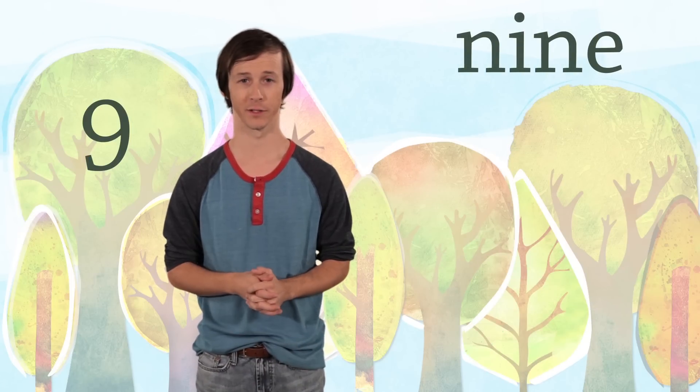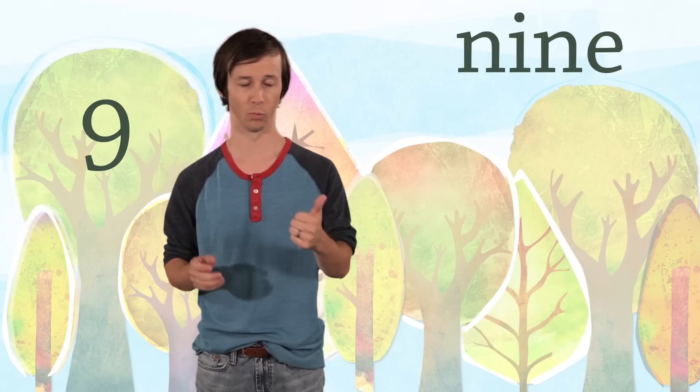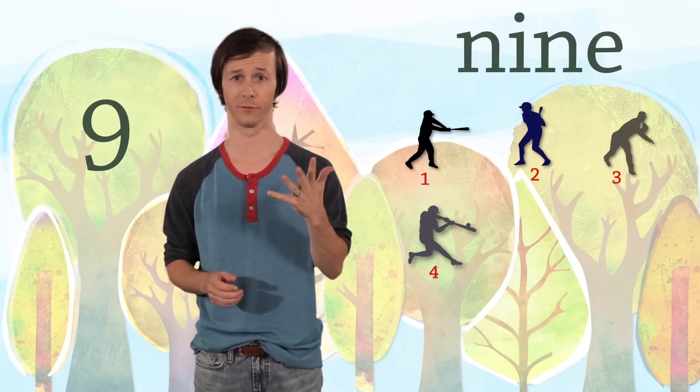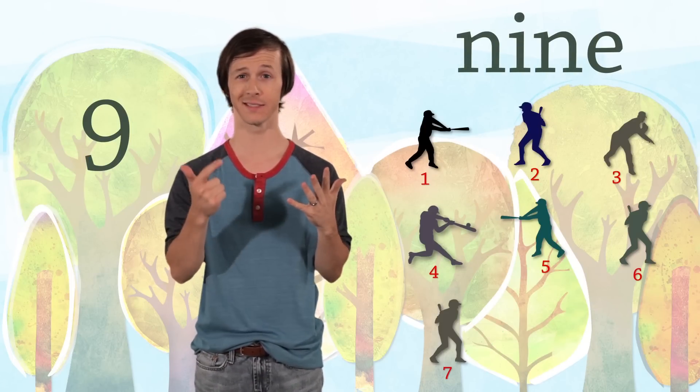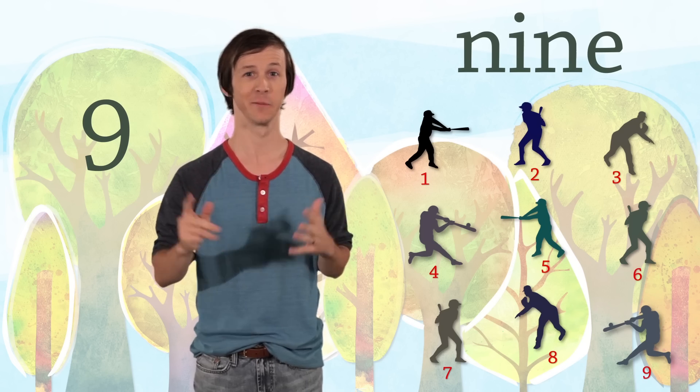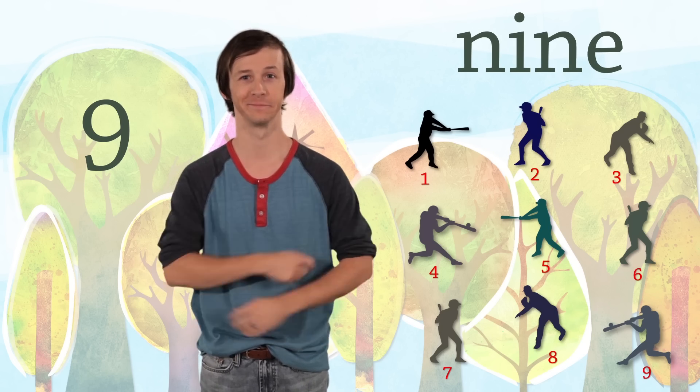There are nine players on a baseball team. One, two, three, four, five, six, seven, eight, nine. Play ball!